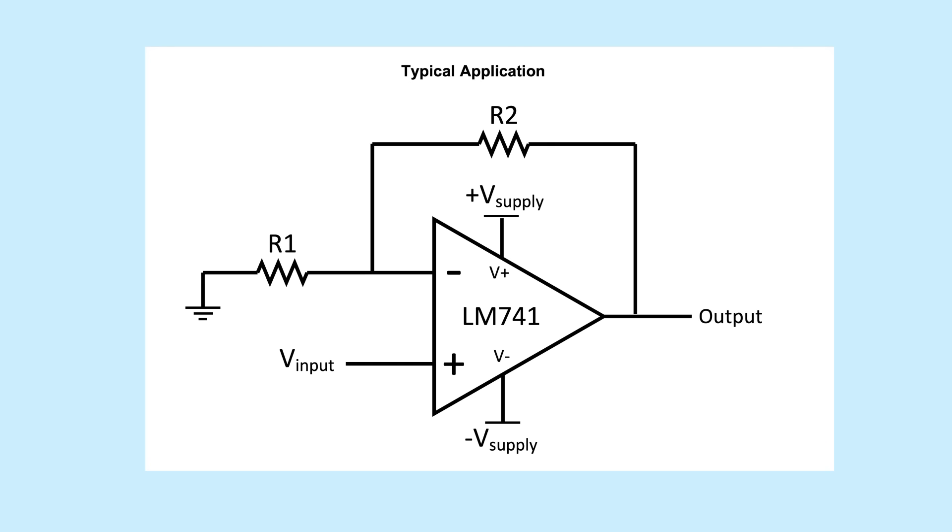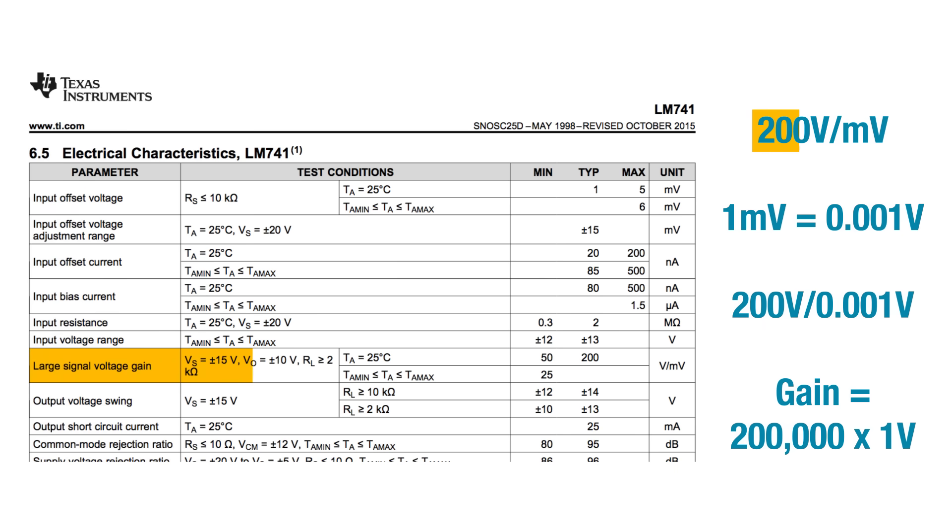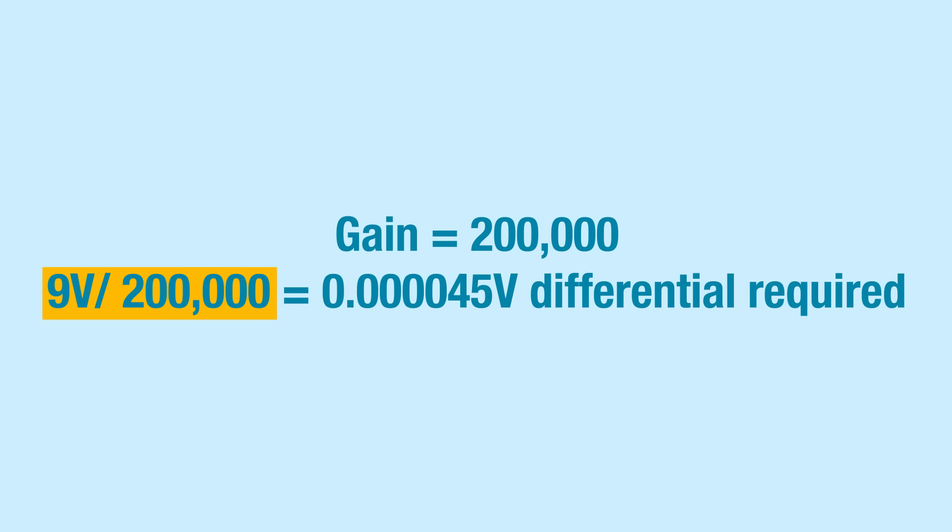Op amps are high gain devices, meaning the difference between the two input voltages, the input differential, can be very small. That's what makes an op amp so powerful. A very small voltage change can be used to control a very large voltage change. One of the most common op amps is the 741. Looking at the datasheet, the typical gain is 200 volts per millivolt. Doing the math, that comes out to a gain of 200,000. So if our circuit runs on a 9 volt power supply, that means a differential of only 45 microvolts is required at the inputs to output 9 volts. That's not very much.